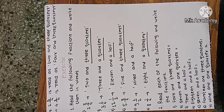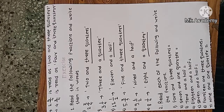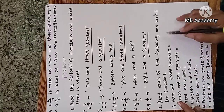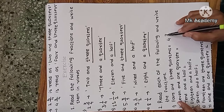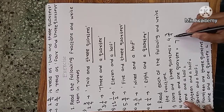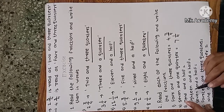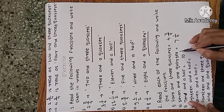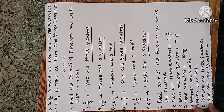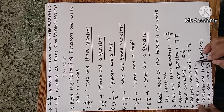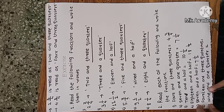Question two: given fractions in words, write them as fractions. Four and three quarters — three quarters means three-upon-four. Seven and one quarter means one-upon-four. Ten and a half, thirty and a half, eighteen and a half. Seven and a half. Fourteen and three quarters — three quarters means three-upon-four.